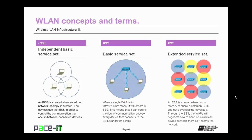Then there's the ESS, or Extended Service Set. An ESS is created when two or more access points share a common SSID and have overlapping coverage. Through the Extended Service Set, the WAPs will negotiate how to hand off a wireless device between them as it roams the network.